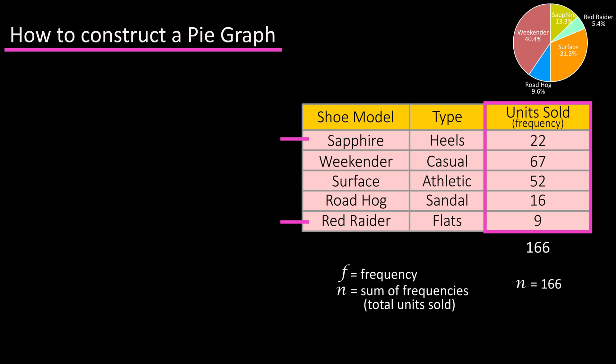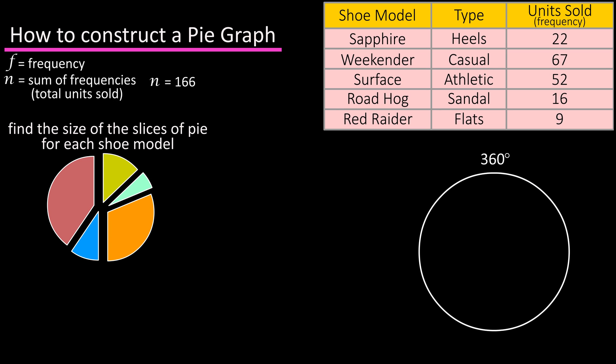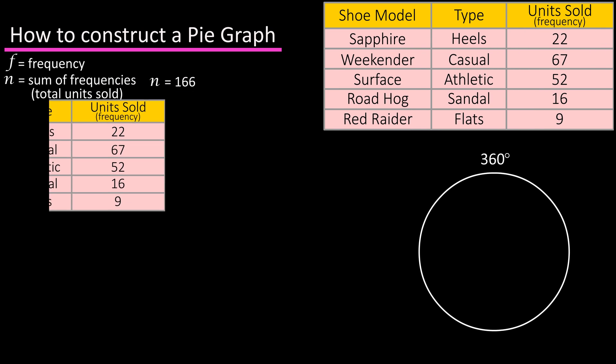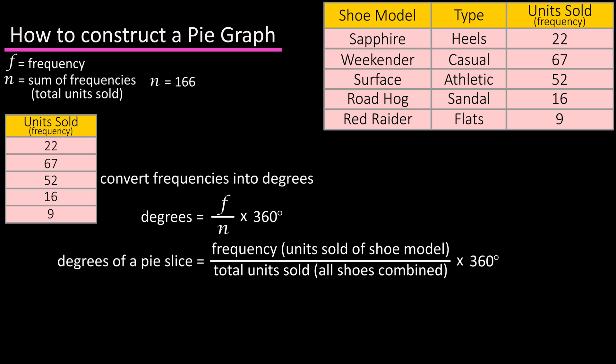The next thing we'll do is find the slices of pie for each of the shoe types. There are 360 degrees in a circle or pie, so we need to convert our data, actually the frequencies of our data, into degrees. The formula to do this is degrees of a pie slice equals f, the frequency, divided by n, the total number of sales, and take that result and multiply it by 360 degrees.